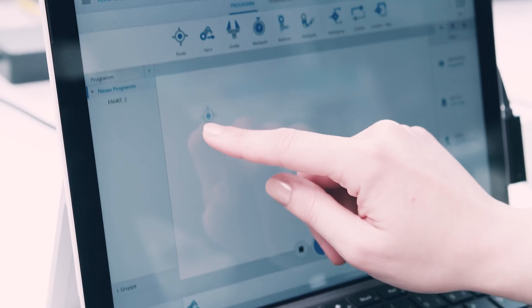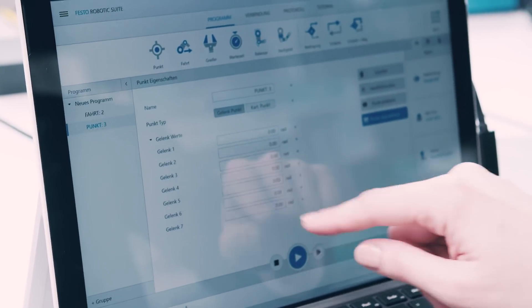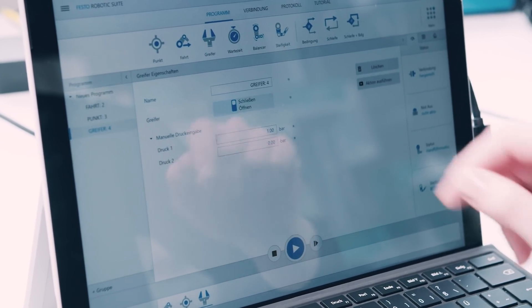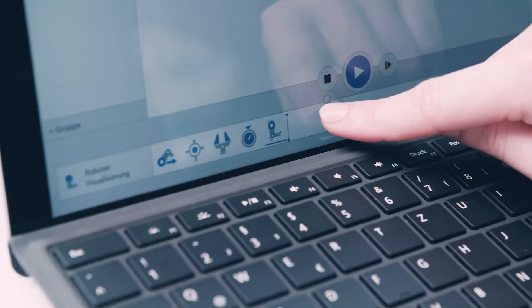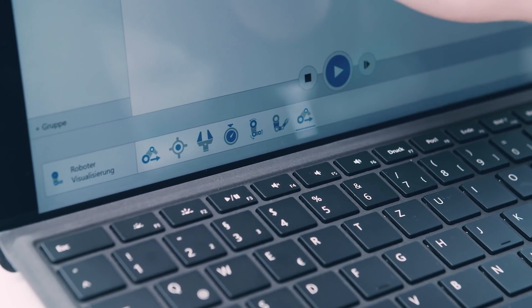In principle, the structure of the program resembles a video editing program. On the top part, we have icons that symbolize the robot's actions, for example, saving a point, making a movement or opening and closing the gripper. These icons can be pulled by drag-and-drop into a sequencer track at the bottom part of the software and arranged there, one after the other in sequence.